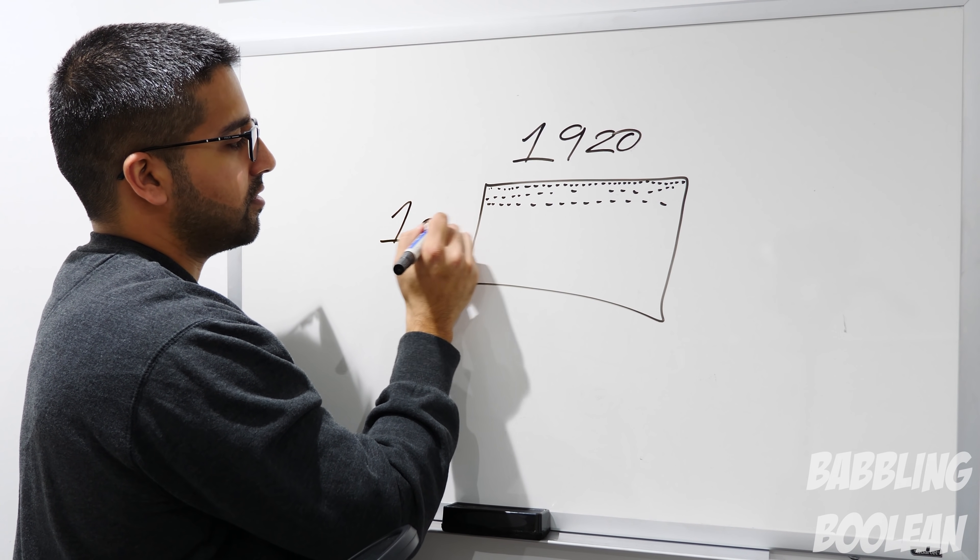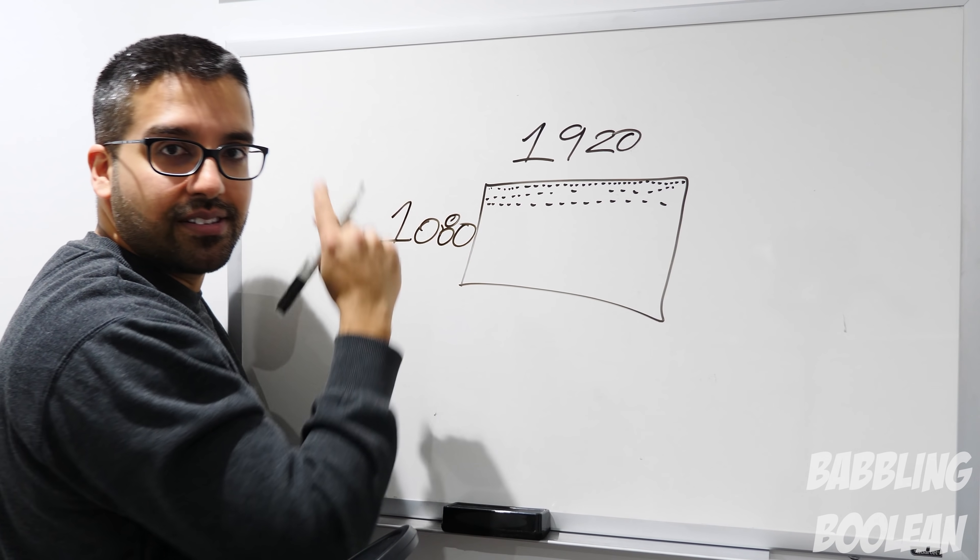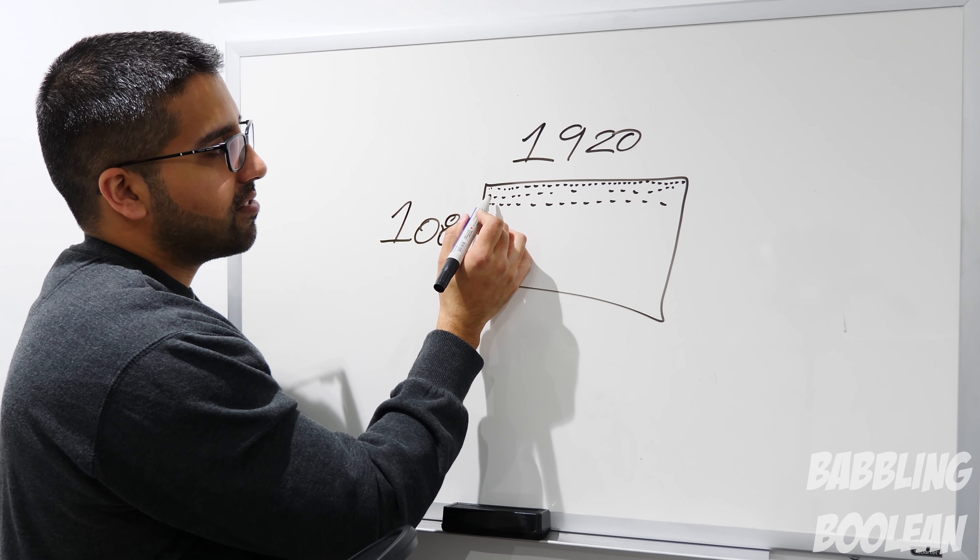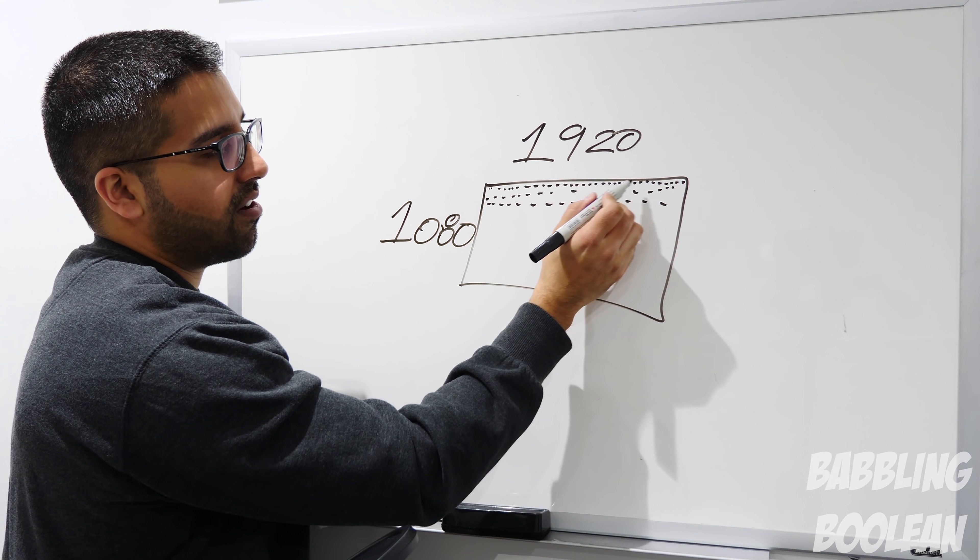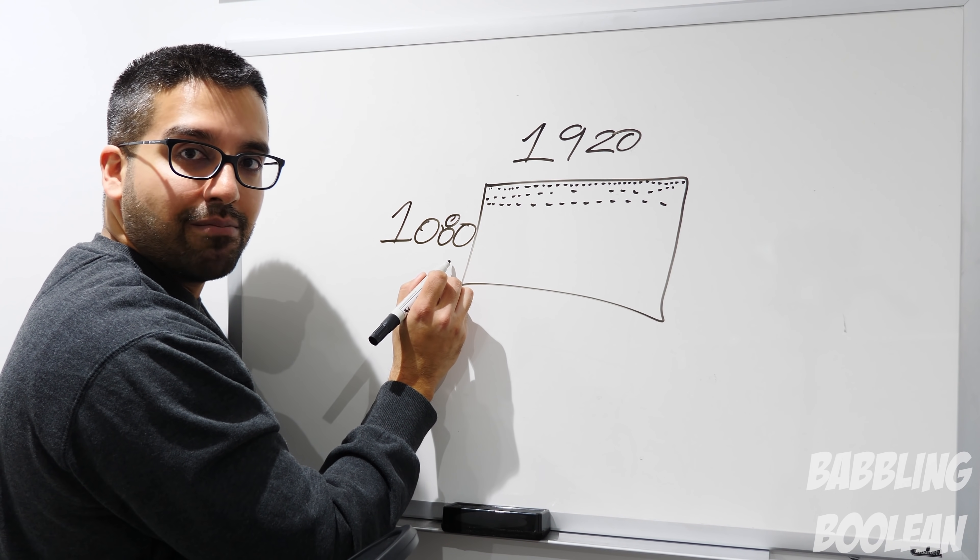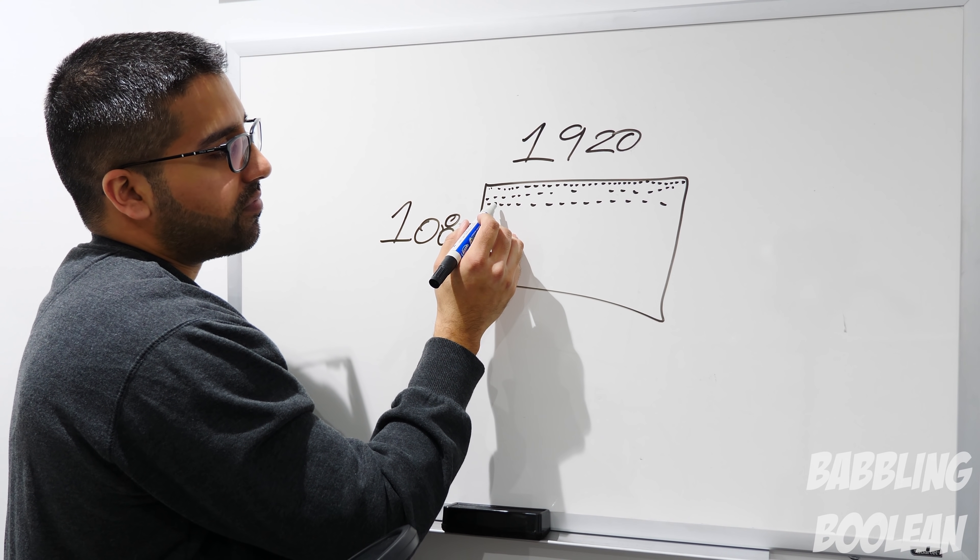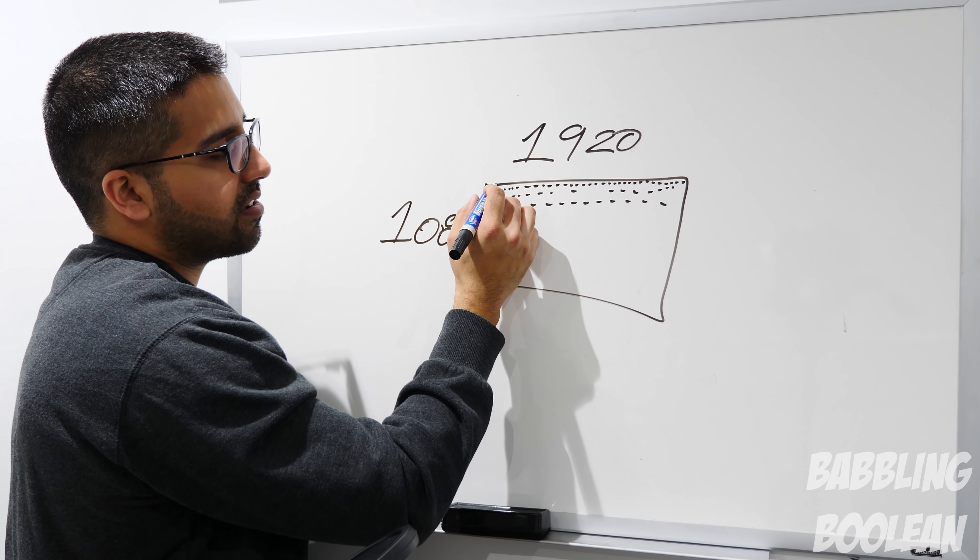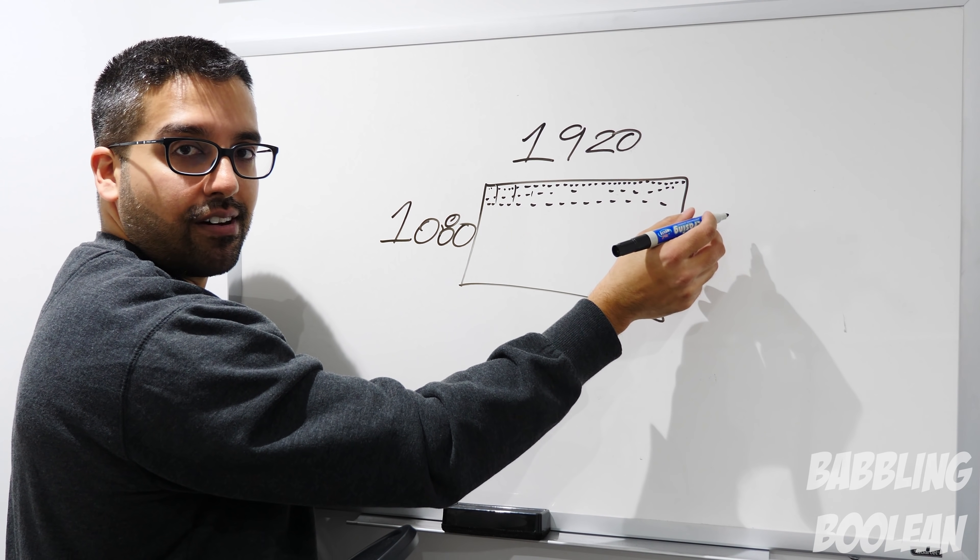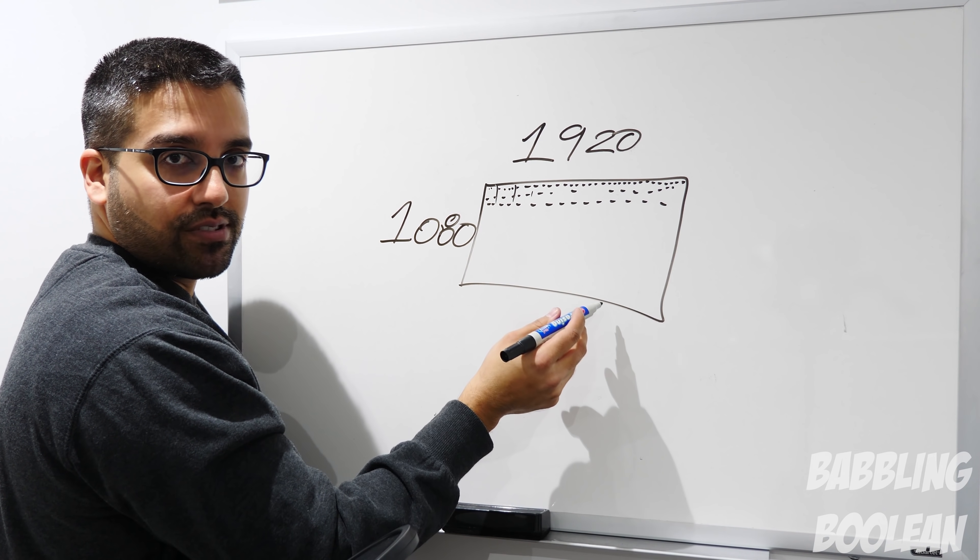As you would have guessed, it's the exact same concept. You have 1920 little pixels going across and that happens 1080 times. Imagine you have 1920 columns of pixels going across and then 1080 rows of that happening. That's where you get 1080 for 1080p.